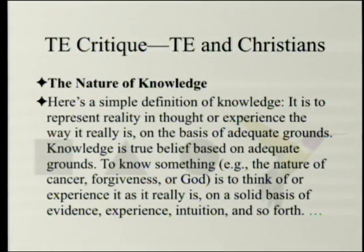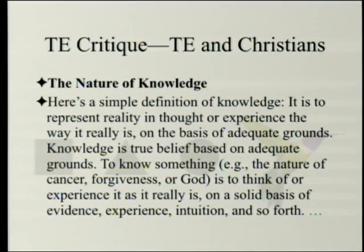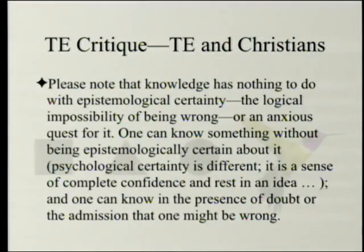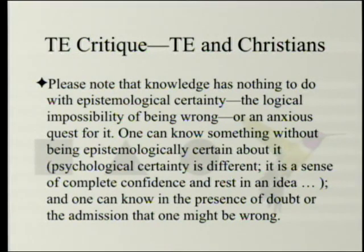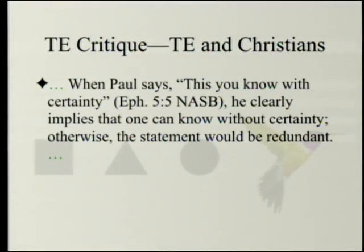The nature of knowledge. Here's a simple definition: knowledge is to represent reality in thought or experience the way it really is on the basis of adequate grounds — true belief based on adequate grounds. To know something — for example, the nature of cancer, forgiveness, or God — is to think of our experience as it really is on a solid basis of evidence, experience, intuition, and so forth. Please note that knowledge has nothing to do with epistemological certainty — the logical impossibility of being wrong. One can know something without being epistemologically certain about it. Psychological certainty is different — it is a sense of complete confidence and rest in an idea. One can know in the presence of doubt or the admission that one might be wrong.